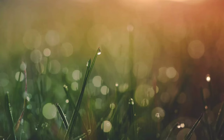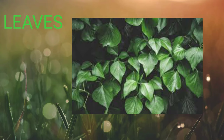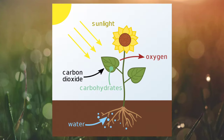Now let us learn about the function of leaves. Children, do you know that leaves are called the kitchen of the plant? Let us learn why. Green plants prepare food in the presence of sunlight by a process called photosynthesis. For this, plants require carbon dioxide, water and nutrients. The water and minerals absorbed by the roots reach the leaf through the stem. The leaves breathe in carbon dioxide through the small holes present on the lower side of the leaf called stomata. The chlorophyll inside the leaves traps the solar energy and converts this light energy into chemical energy by using carbon dioxide, water and nutrients. The end products are glucose and oxygen.